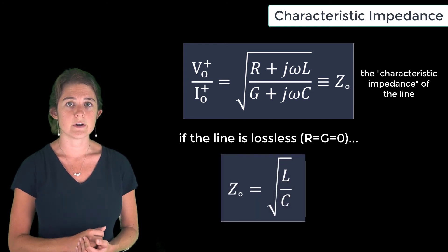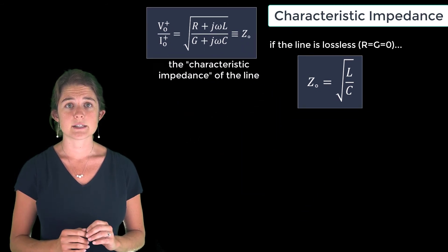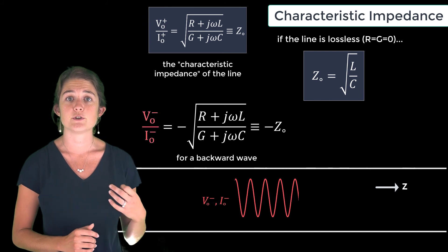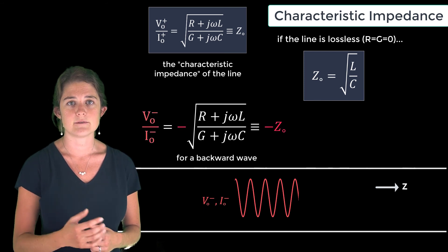We can repeat this process for a backward propagating wave to show that the ratio of backward voltage to backward current is negative Z₀.